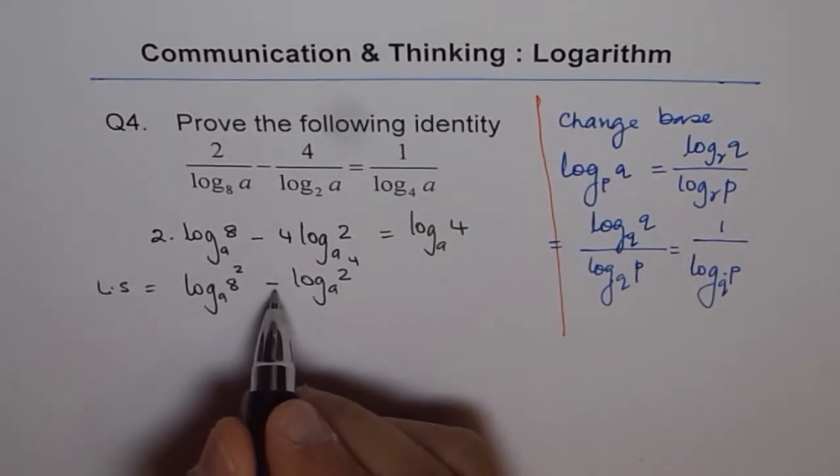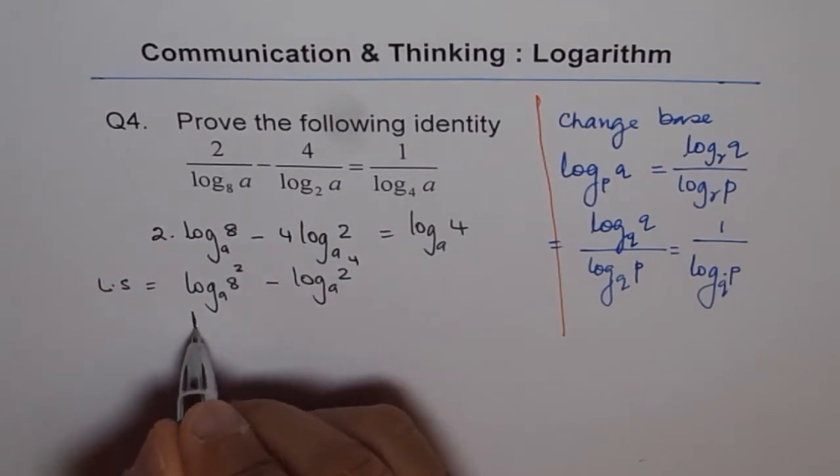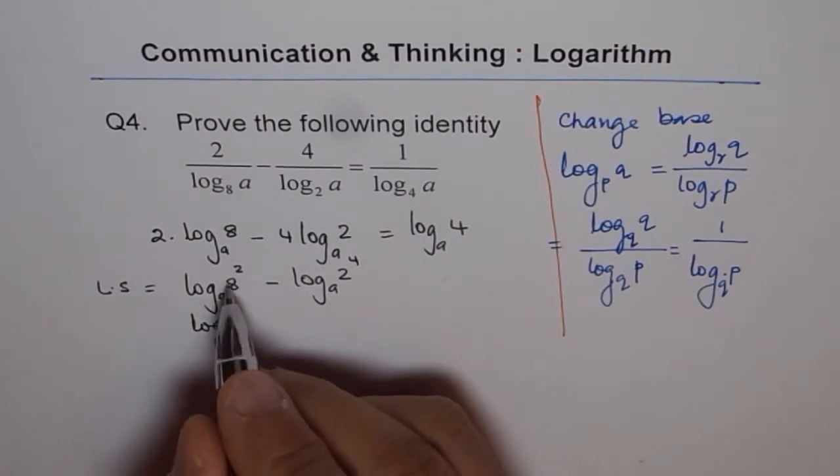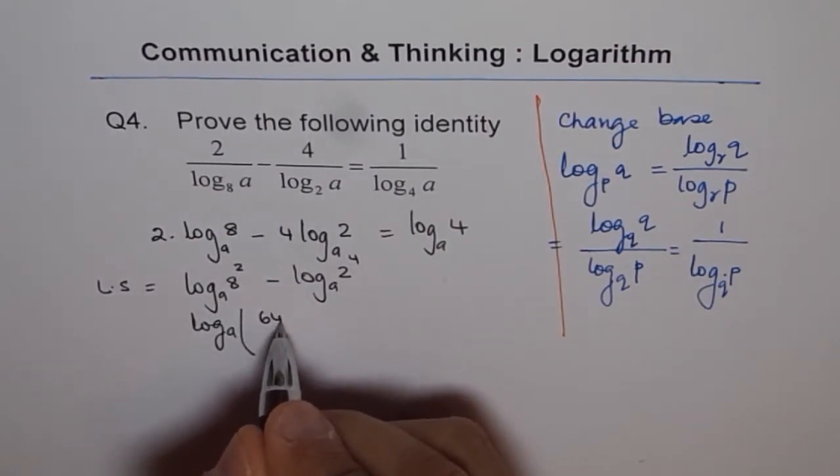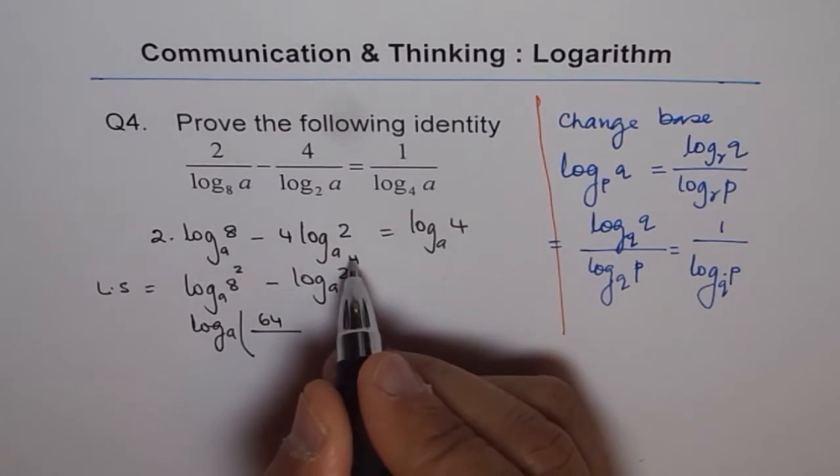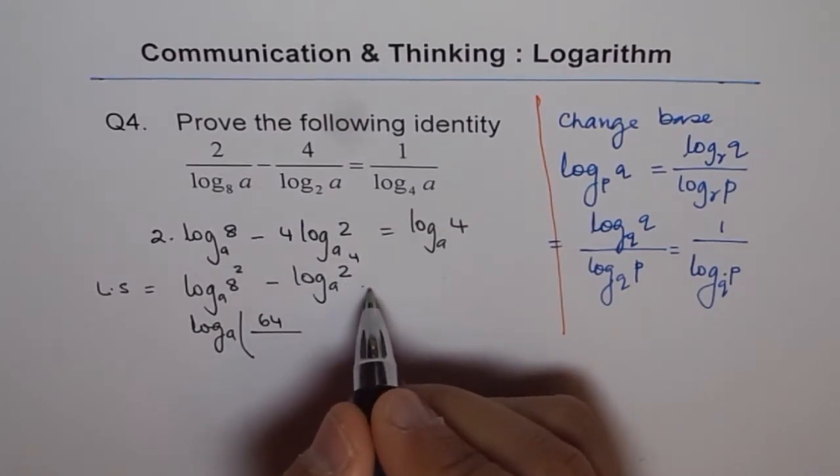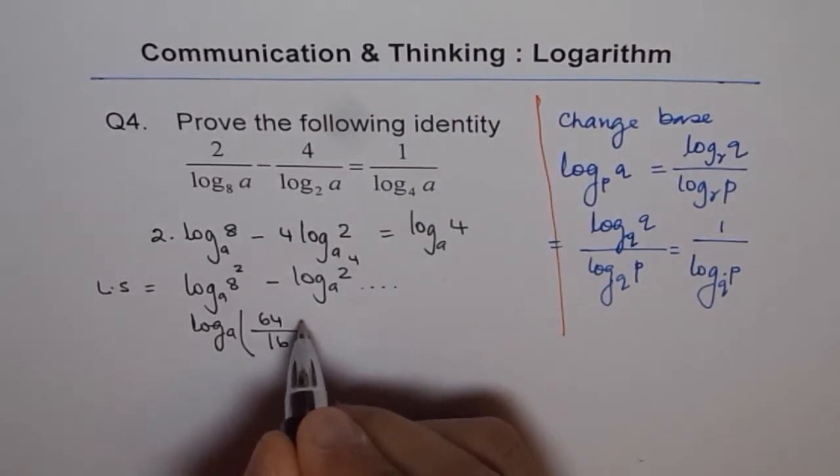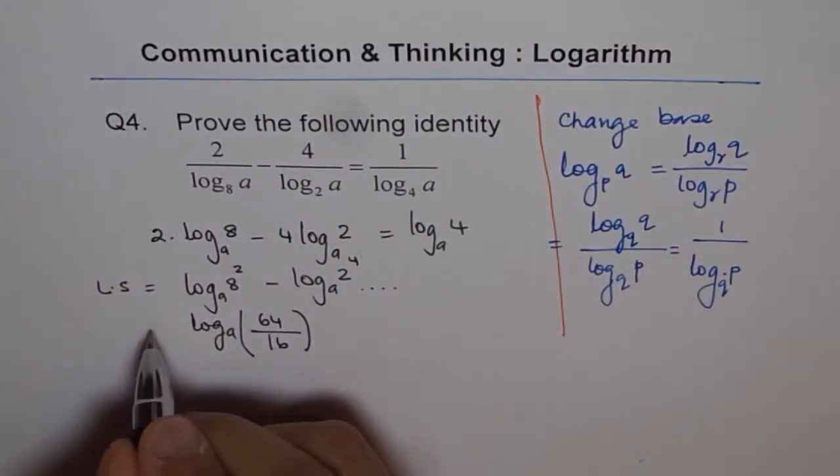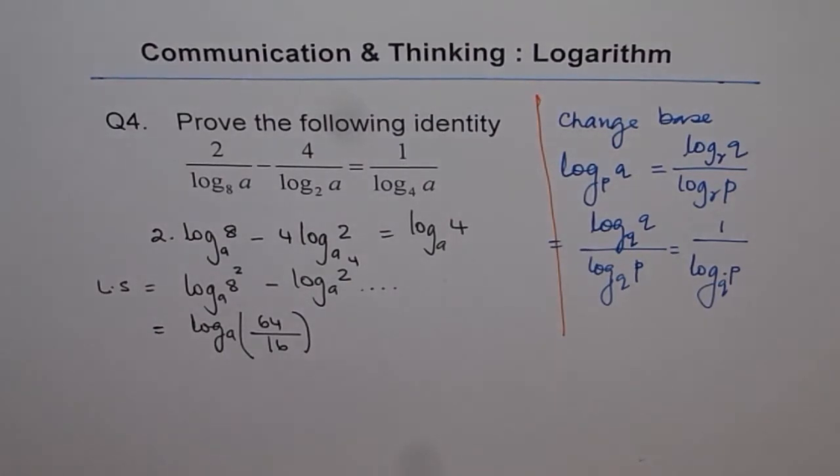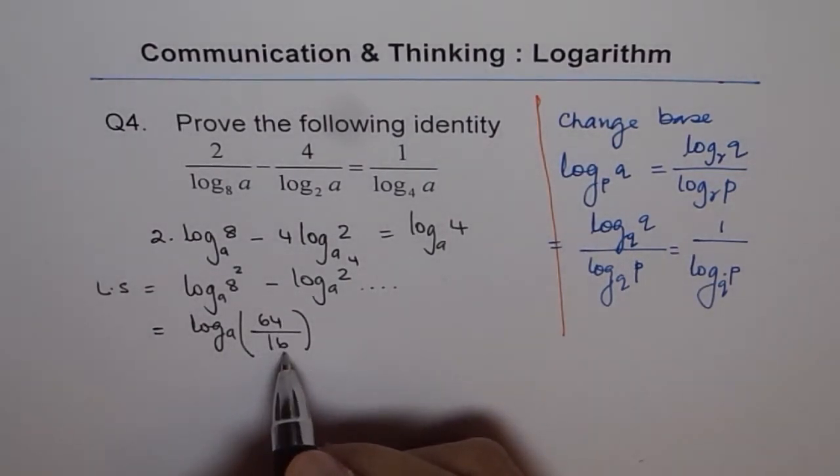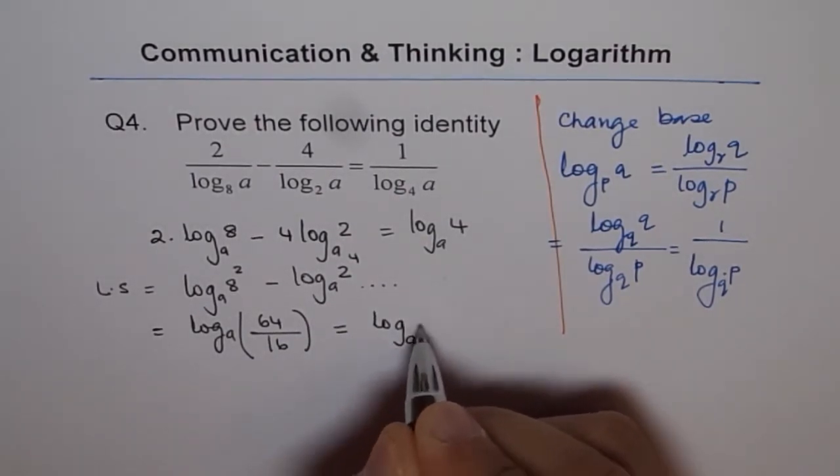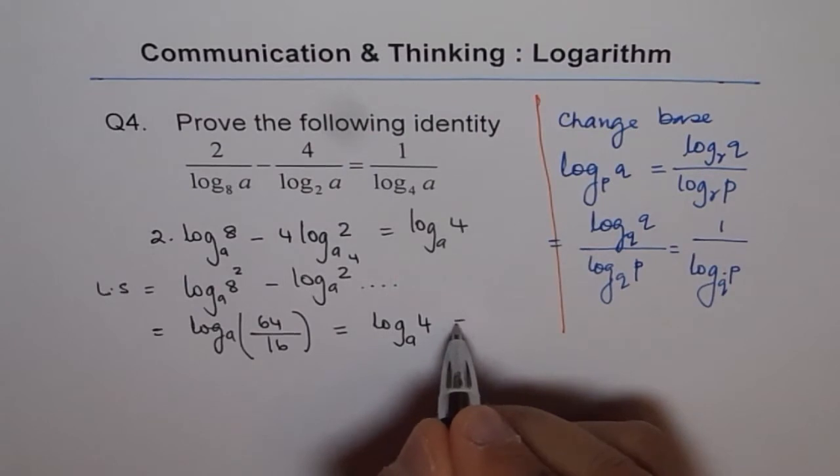So here minus means they get divided. So we can write this as log A of 8 square is 8 times 8 which is 64, divided by 2 to the power of 4. That means 2 times 2 is 4, 4 times 2 is 8, 8 times 2 is 16. So that is what the left side is equal to. Now 64 divided by 16 is 4. So we get this equals log to the base A of 4, which is our right side.